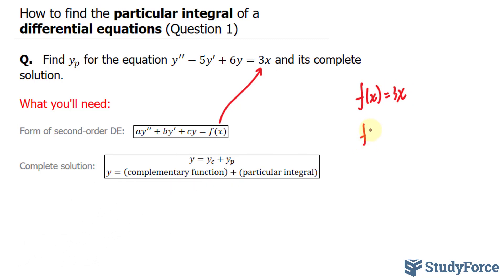Its derivative, which I'll denote as f prime at x, is equal to 3, and its second derivative, f double prime at x, is equal to 0.